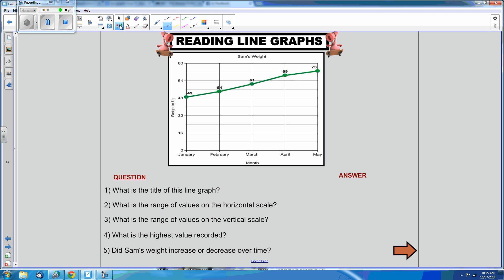Question 1: What is the title of this line graph? The title can be found at the top of the graph. It is Sam's weight. This graph is telling us how Sam's weight has changed over time.